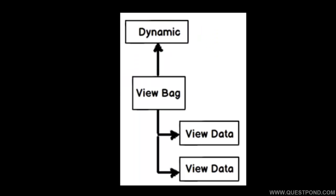There is one more way by which we can pass data from controller to views, and that is by using ViewBag. ViewBag is nothing but a collection of ViewData — it simplifies the syntax of ViewData. In the previous example when we were writing ViewData, we were using square brackets and double quotes. ViewBag helps simplify those syntaxes. ViewBag uses the dynamic keyword of .NET.